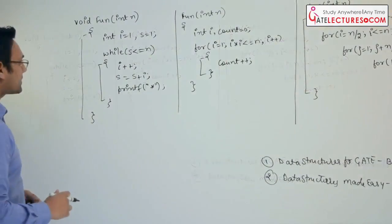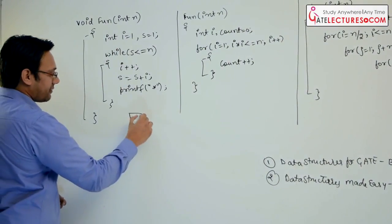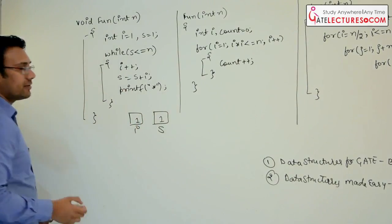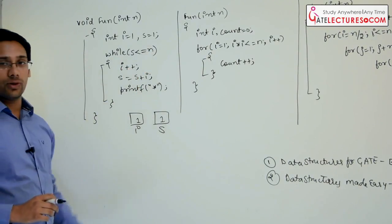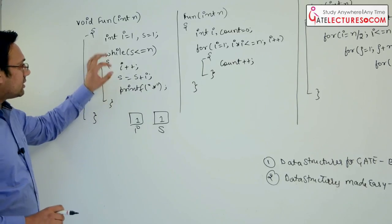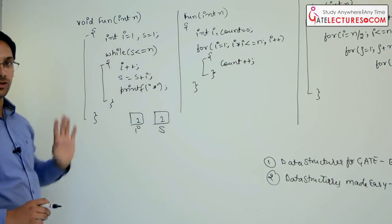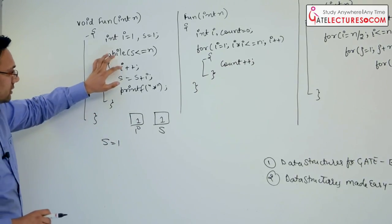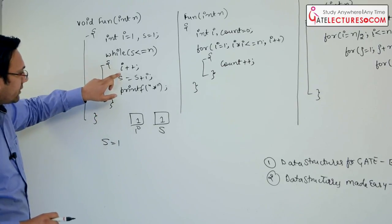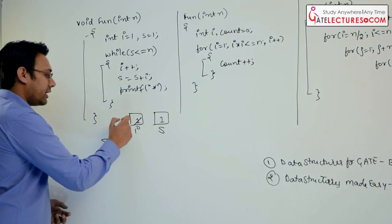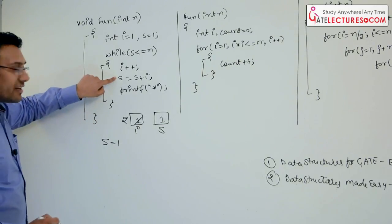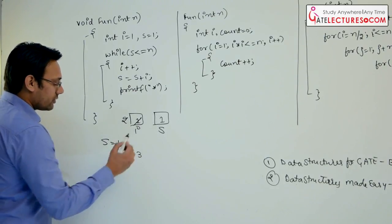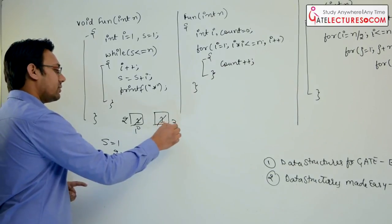Let us see the first question. Initially the value of i is 1 and the value of s is 1. While s is less than or equal to n, this condition is true when 1 is less than n. Initially i was 1 and s was 1, then we have i++, so the value of i becomes 2. The next value of s becomes s = s + i, so it is 2 + 1 = 3. Therefore the value of s will become 3.